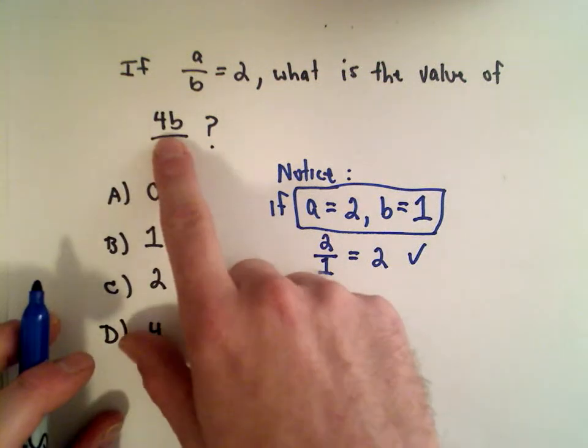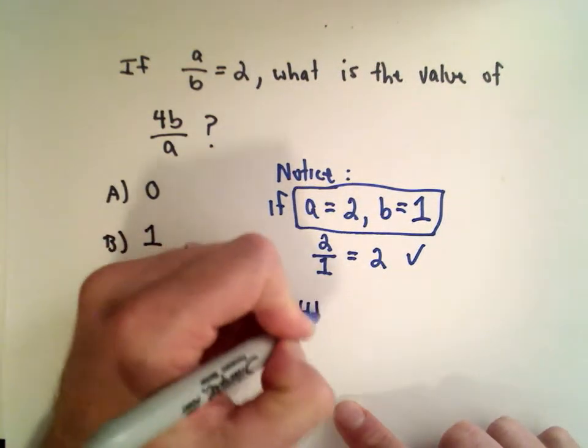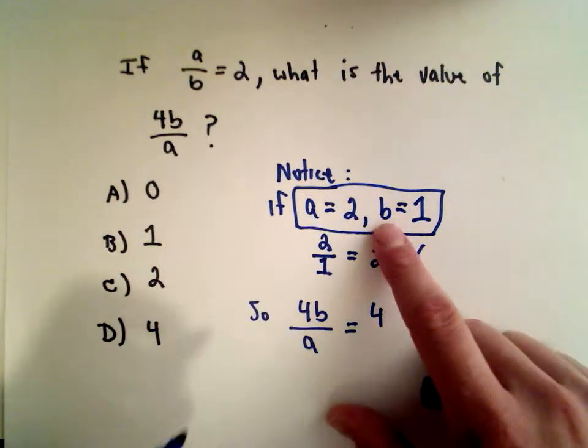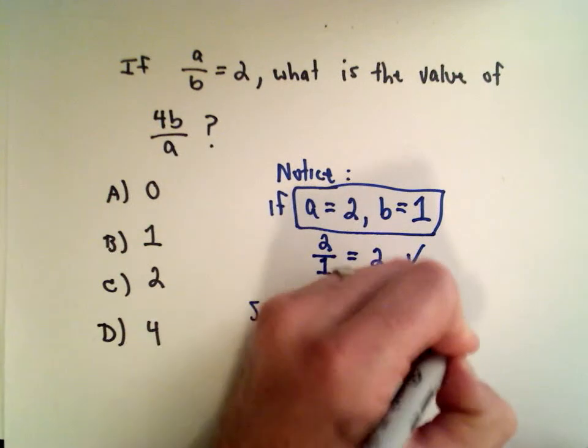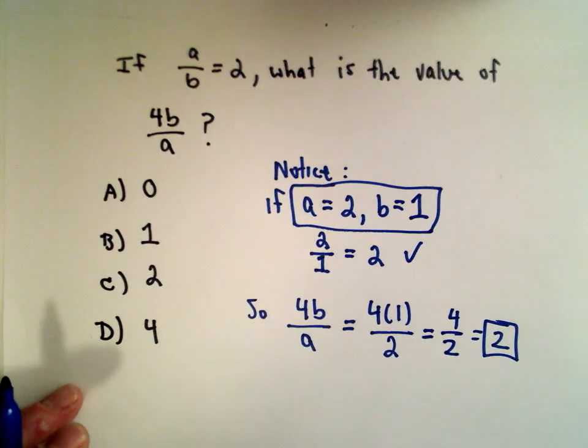Just substitute those values now into 4B over A. So 4 times B over A, that would equal 4 times, again, we said B is equal to 1, A is equal to 2, that would be 4 over 2, which would give you 2, and boom, there's your answer.